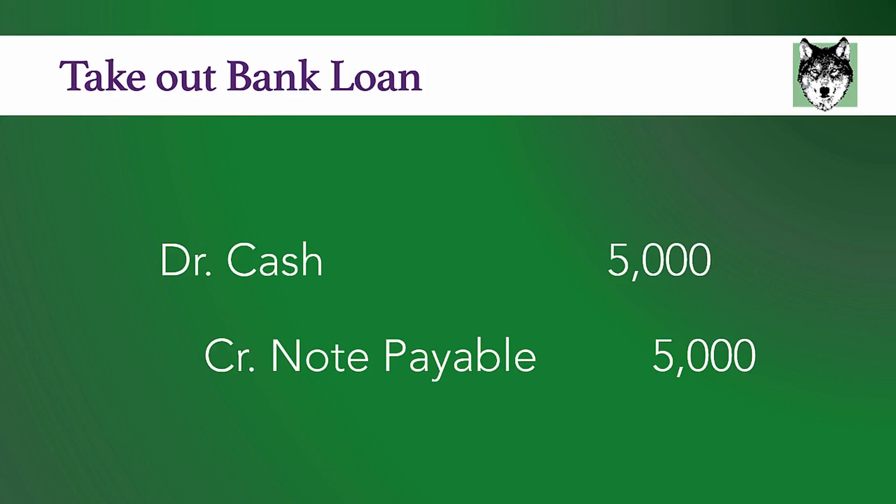This next journal entry is taking out a bank loan. When you take out a bank loan, you get a large sum of cash and you owe something to the bank. You're going to debit cash and credit notes payable. Your cash — your asset — is going to increase with the debit, and your notes payable — your liability — is going to increase as well, which is the claim against those assets. So you get a whole lot of cash with the bank loan, but you also increase your debt and owe a lot to the bank.